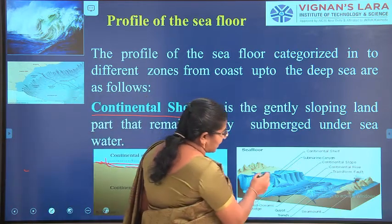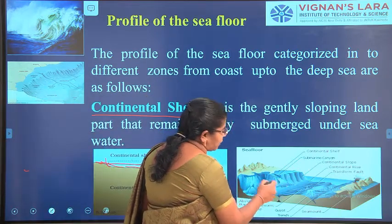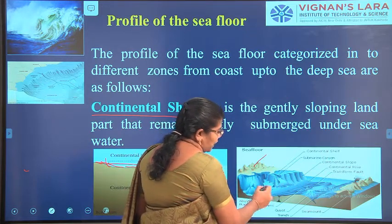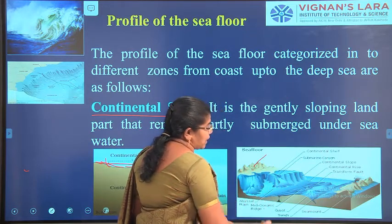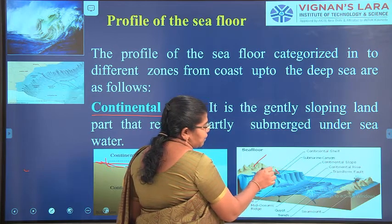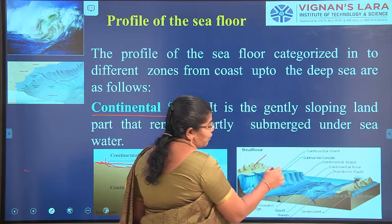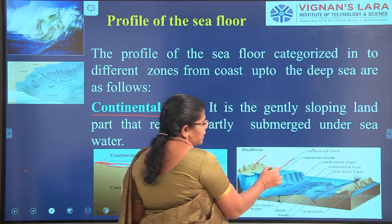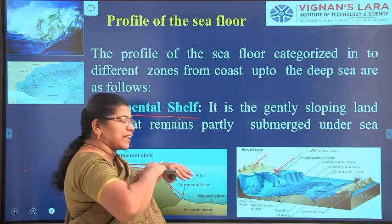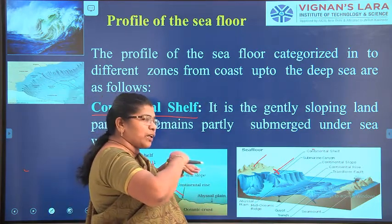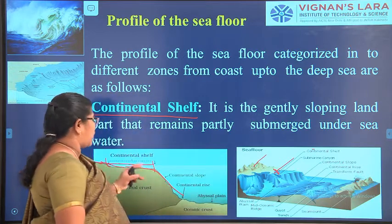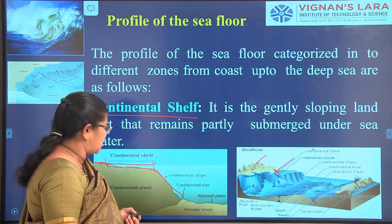Looking at the diagram, the color difference is visible — this is the earth part, and the blue color represents the water. Where the depth is less than 4 kilometers, this is the continental shelf. It is very narrow, just extending from the seashore into the sea.